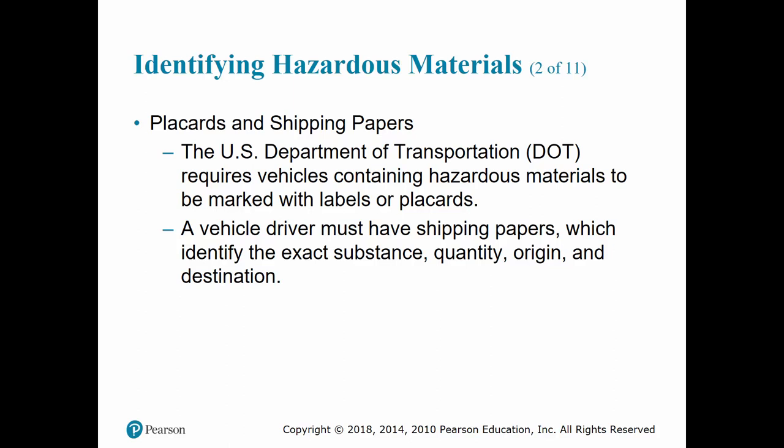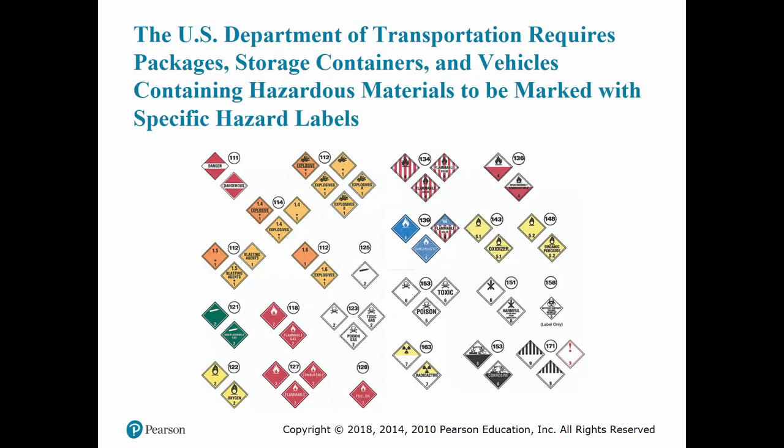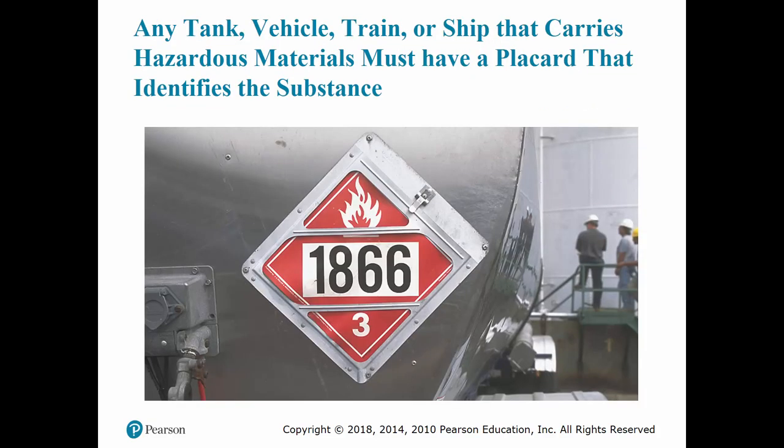This placard contains important information that can aid you in determining the best course of action. The driver should also have shipping papers or MSDSs, which identify the exact substance, quantity, origin, and destination. The color of a placard also indicates what class of hazard is contained within. A legend indicates whether the material is flammable, radioactive, explosive, or poisonous. Often a placard displays a four-digit UN number, or United Nations identification number, that can identify the hazardous material.